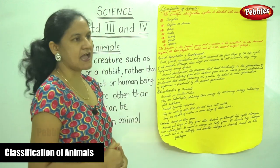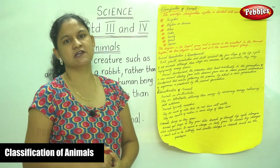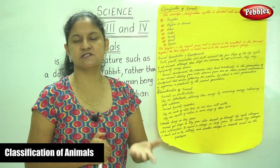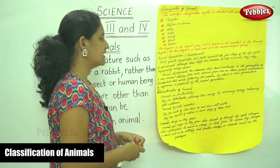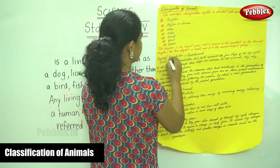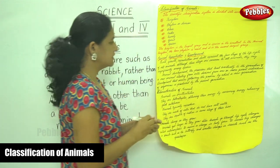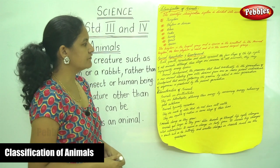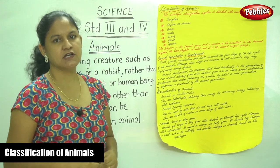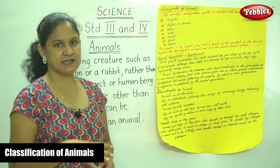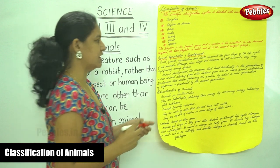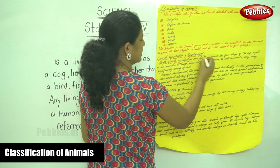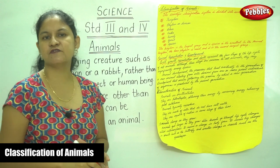Next we are going to see animal reproduction and development. There are certain animals that lay eggs and certain animals that give birth to young ones, just like humans. Birth, growth, reproduction, and death represent the four stages of the life cycle of all animals.